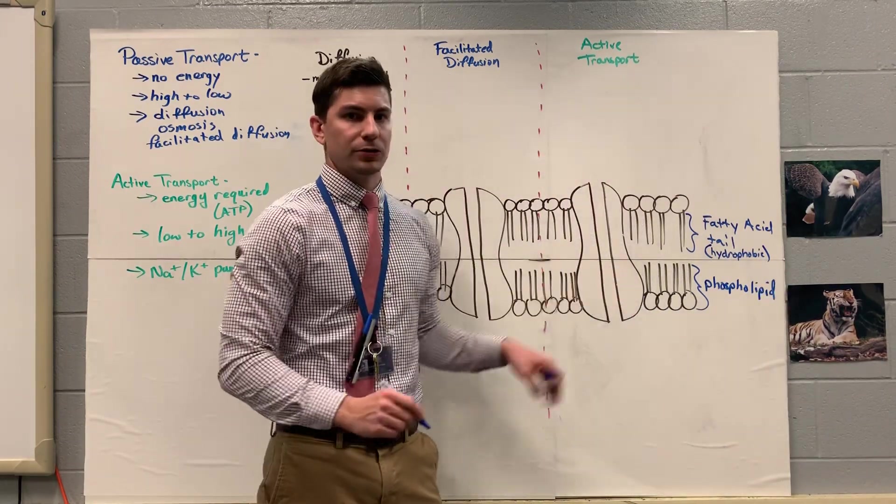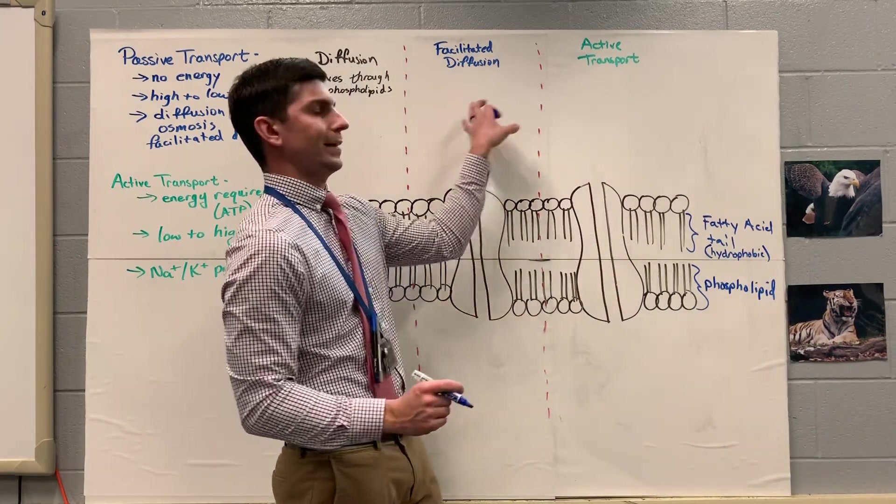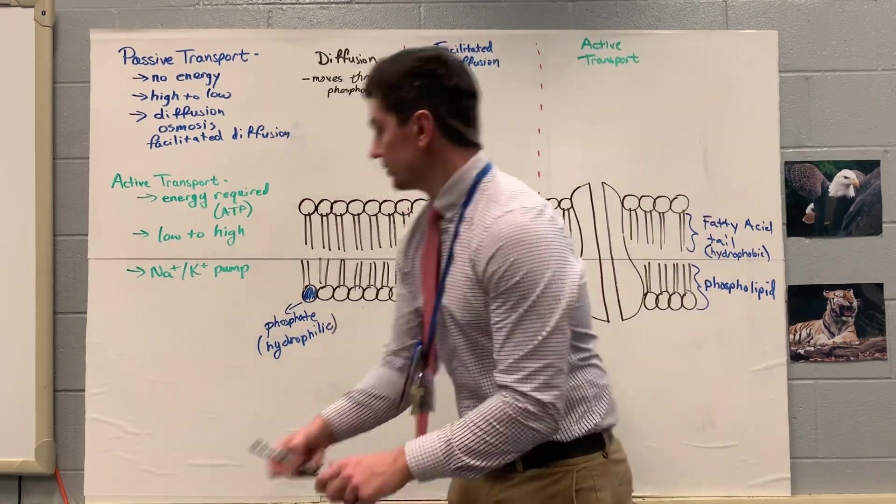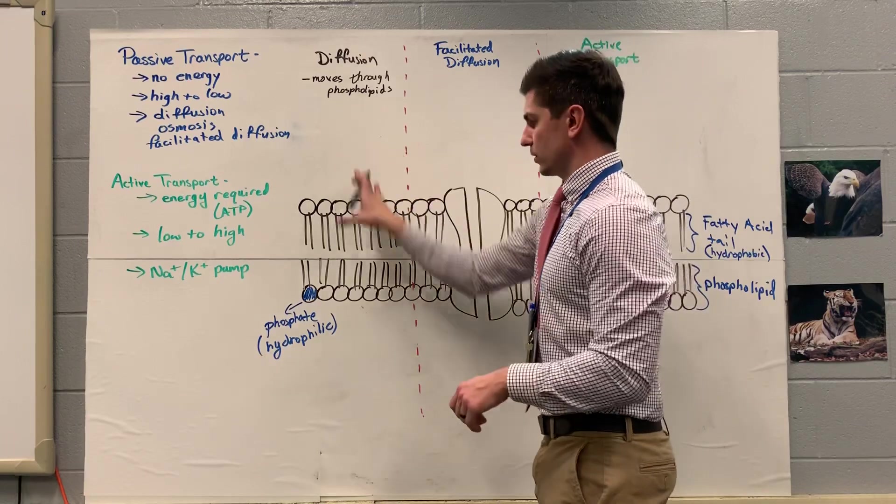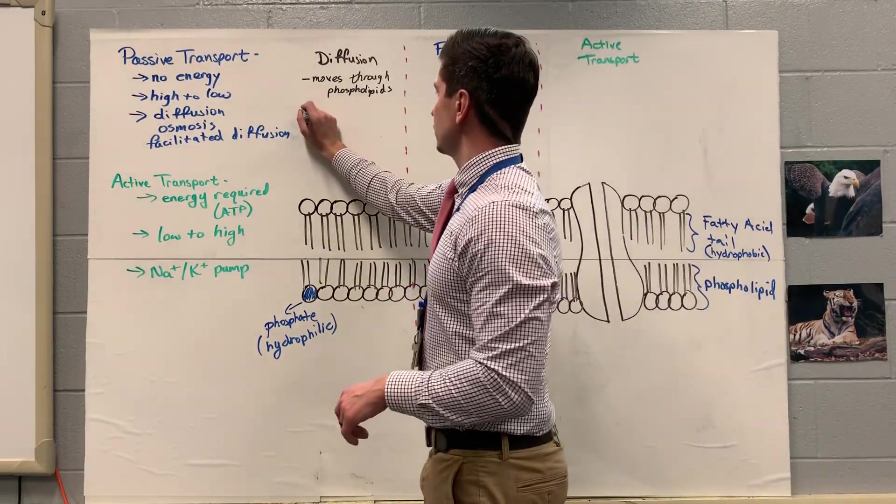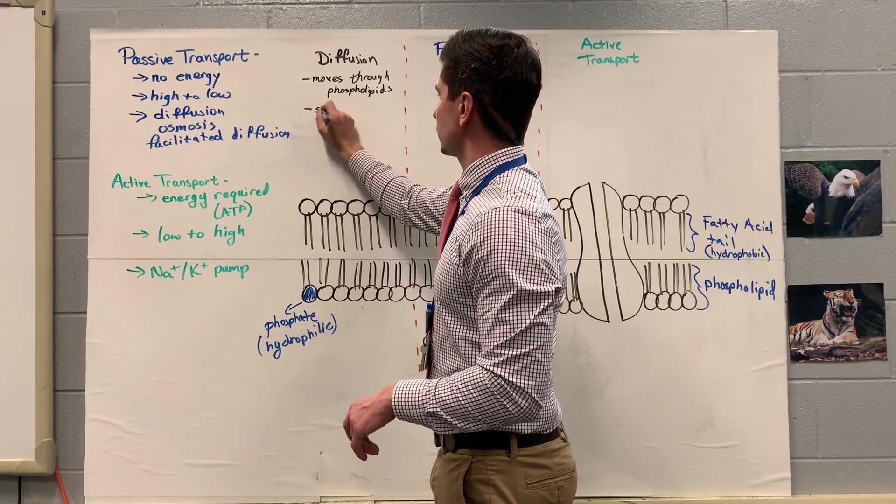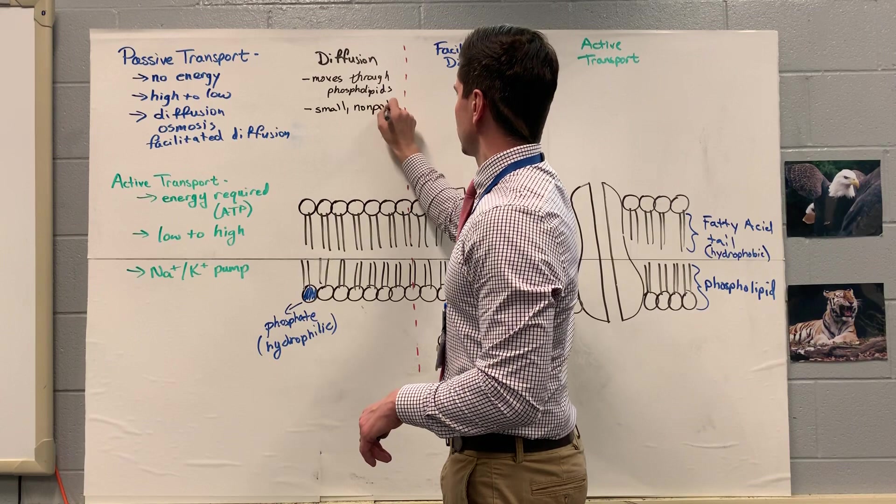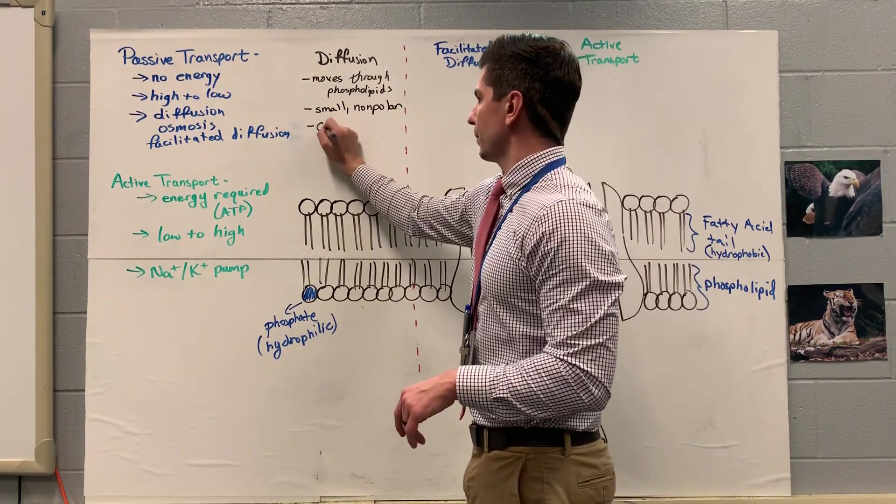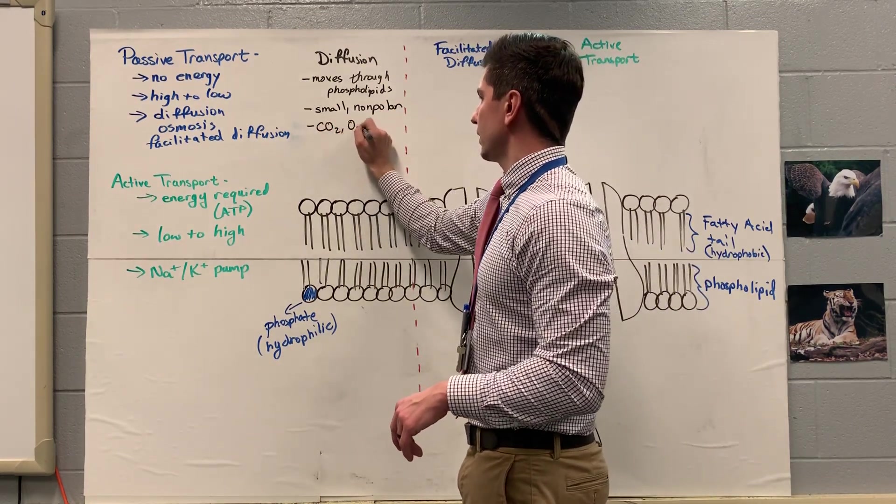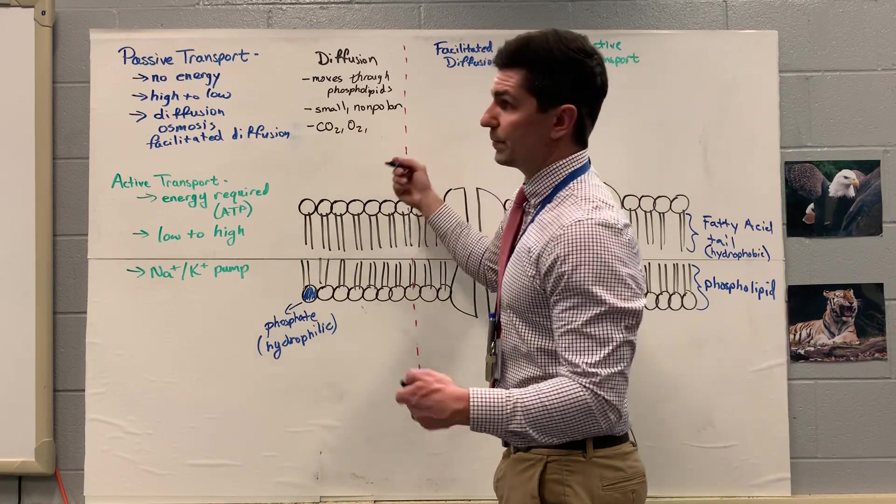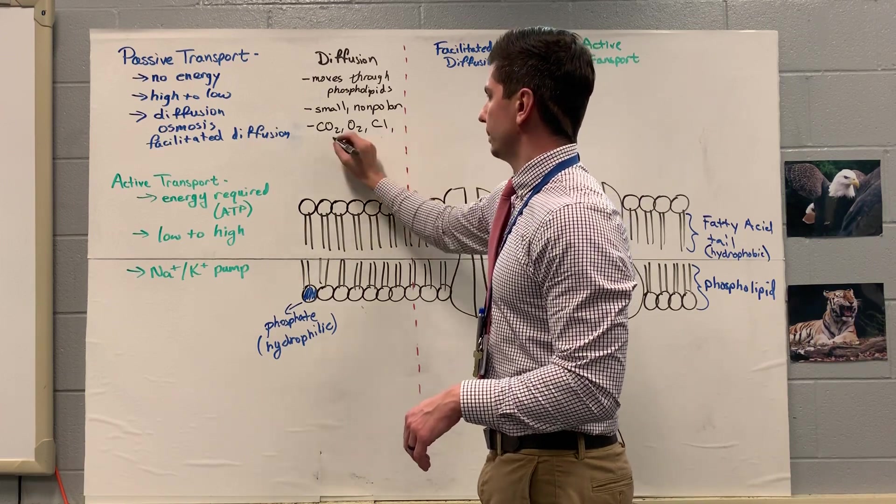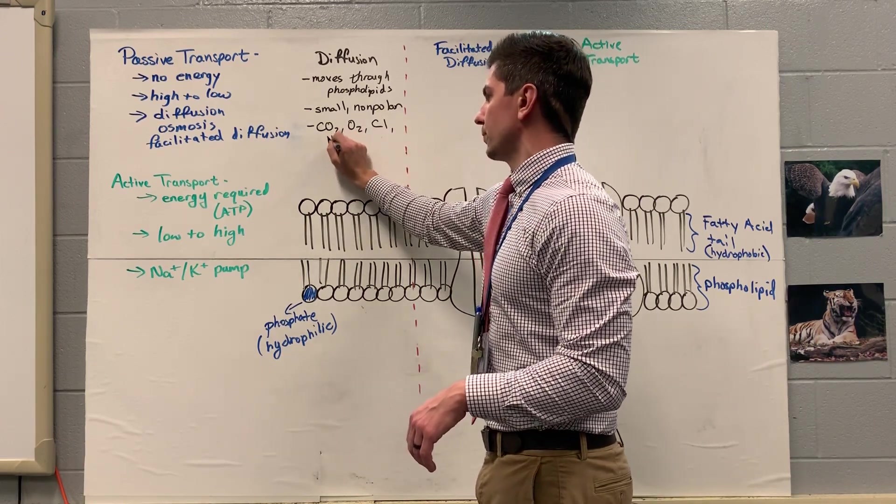And there is our membrane protein there. We'll talk about those a little bit more when we get into facilitated diffusion and active transport. But there is diffusion. Like I said, it's going to move right through our phospholipids. So these are going to be moving small, non-polar molecules. Things like carbon dioxide and oxygen. Maybe some elements. Maybe like regular chlorine or regular sodium, we'll say.